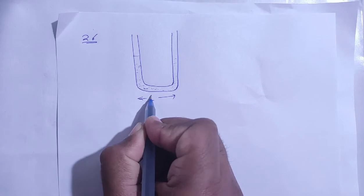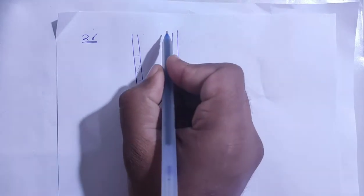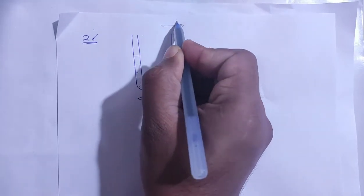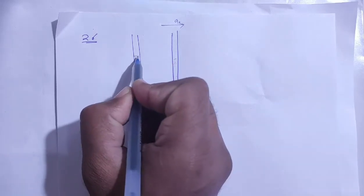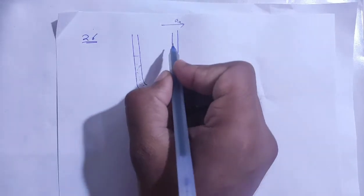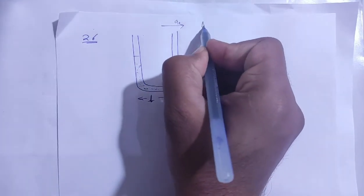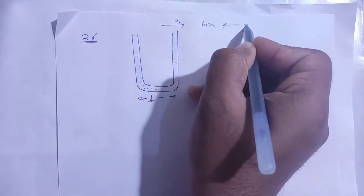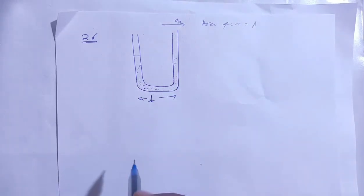So here we have a separation of small l, and this whole system is accelerating at A naught. And this is the area of cross-section, Area of cross-section A.